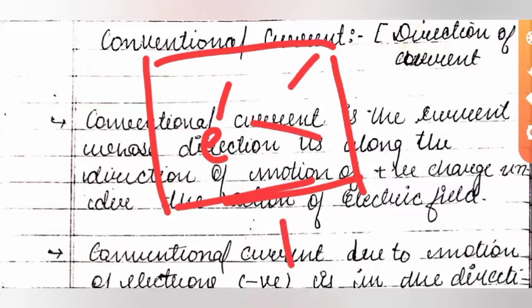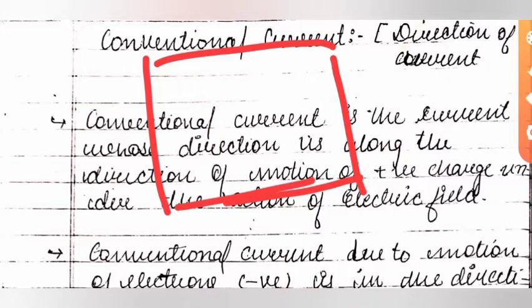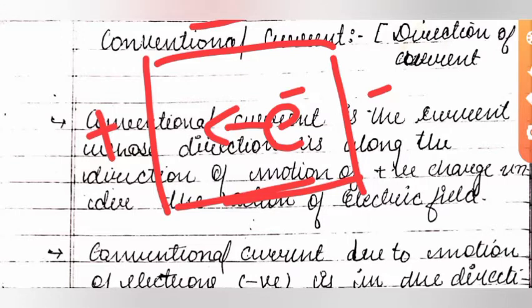When no field is applied, the electrons are thermally agitated and moving randomly, so the net current value is zero. But when we apply a potential — positive on one side and negative on the other — the current direction is defined as opposite to the motion of the electrons, from high potential to low potential.